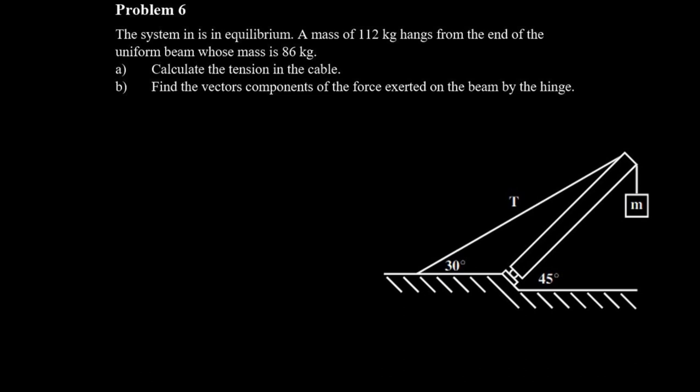For this question we've got a beam on a 45 degree angle with a rope coming off it at a 30 degree angle. The question says the system is in equilibrium. A mass of 112 kilograms hangs from the end of the uniform beam whose mass is 86 kilograms.